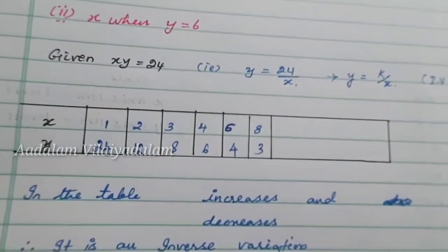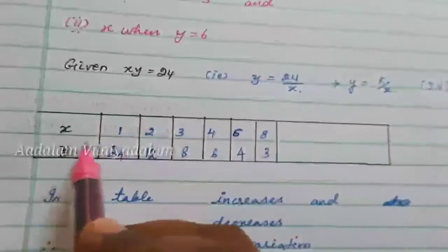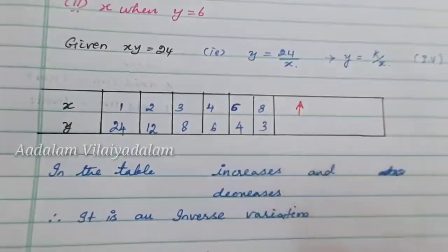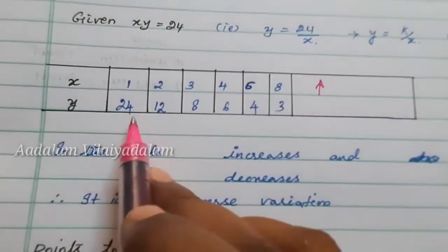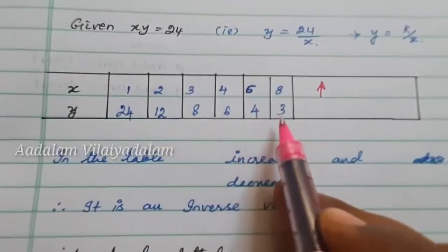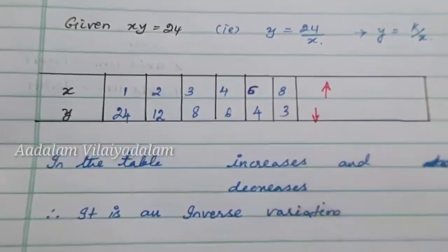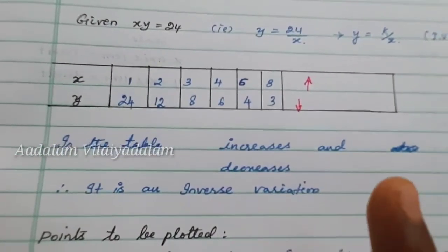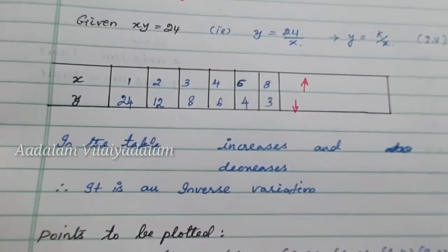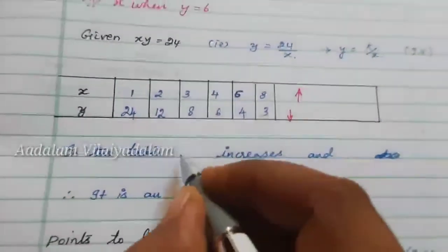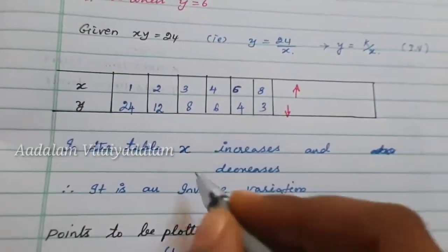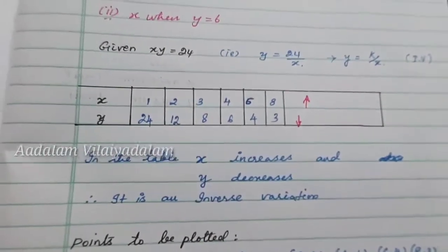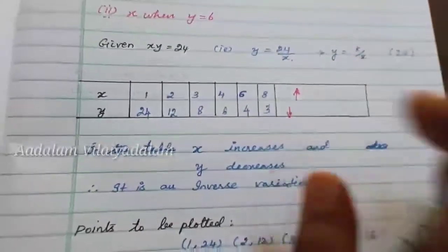Check the x values: 1, 2, 3, 4, 6, 8 — they are increasing. Look at the y values: 24, 12, 8, 6, 4, 3 — these are decreasing. When one value increases and another decreases, that variation is called inverse variation. Therefore, in the table x increases and y decreases, so it is an inverse variation.